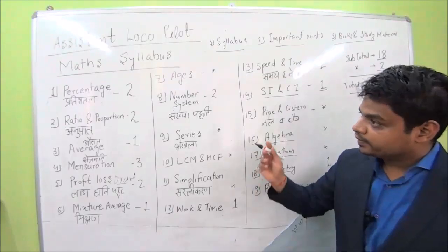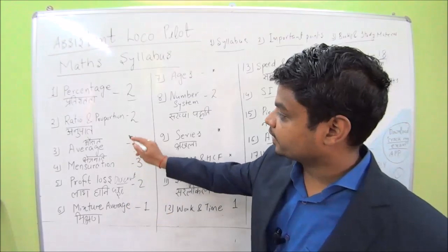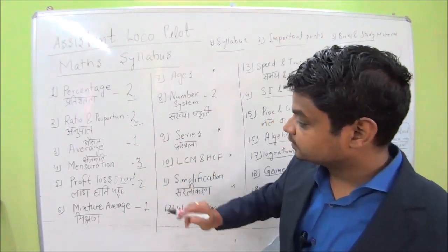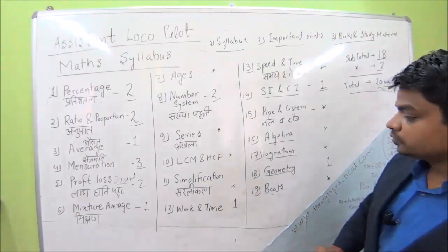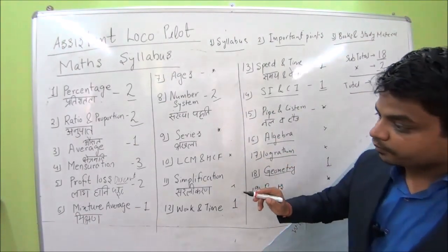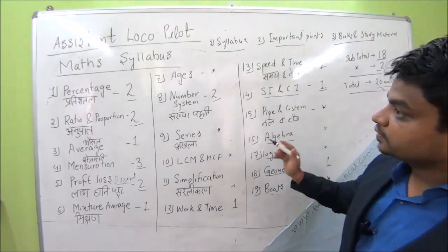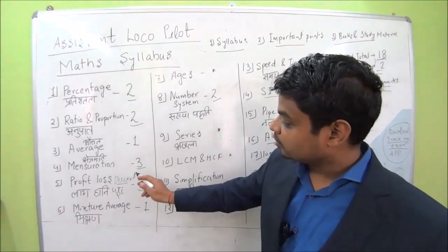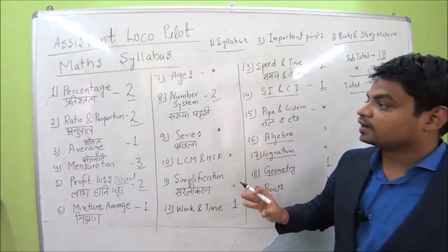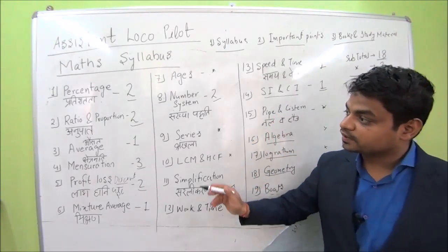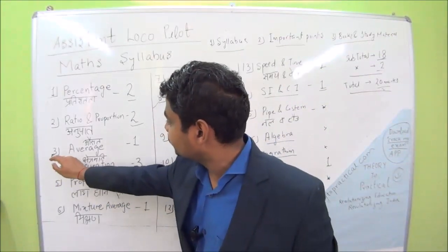As you can see on the board, the most important chapters are: percentage with 2 marks, ratio and proportion with 2 marks, mensuration with 3 marks, number system with 2 marks, and profit and loss with 2 marks. So out of 20 marks — 2+2=4, +3=7, +2=9, +2=11 — more than 50% of questions come from these topics. So these topics are the most important.